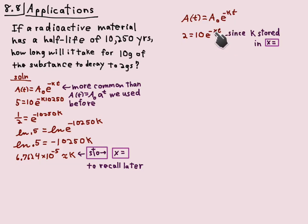Now I need to solve for t. x is the known number I calculated — approximately 6.7624 × 10⁻⁵ — that's what's stored as k. To get to the exponent, I take ln of both sides again. On the left I get ln(0.2), and on the right ln(e^(-xt)) gives just −xt, since ln and e cancel.